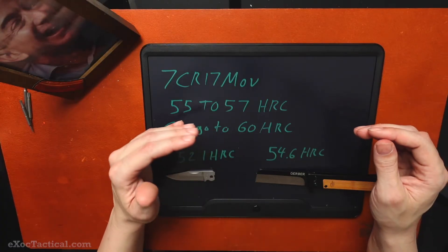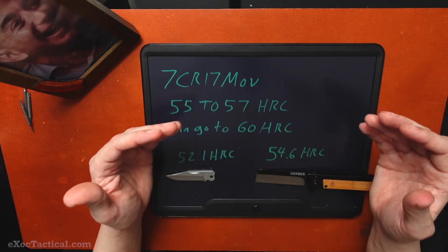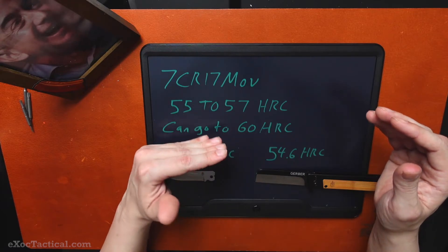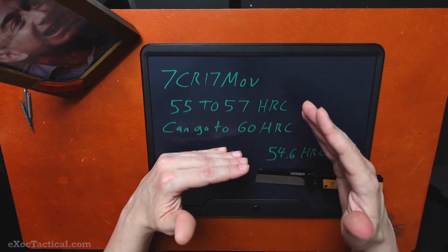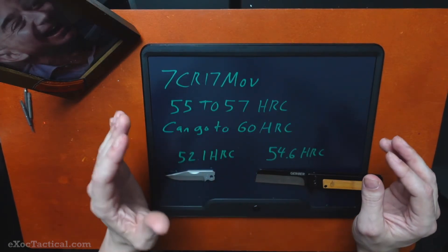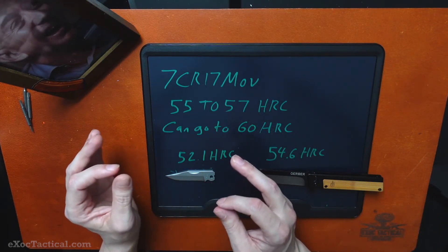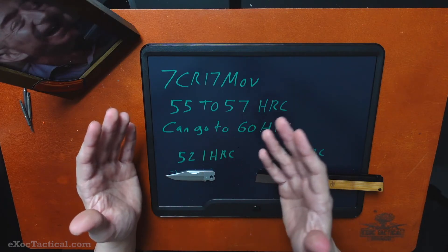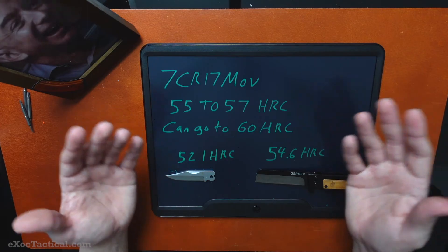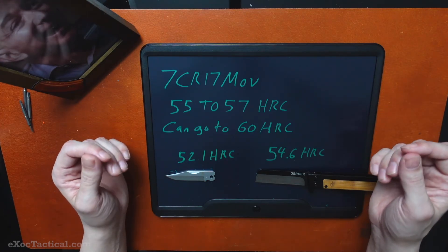Alright, so the Quadrant is made from 7CR17MOV, should be hardened to 55 to 57 HRC. Sometimes it can even go up to 60 Rockwell hardness. We're coming in at a nice 54.6 on the softy side. Now the Mini ParaFrame is coming at 52.1. They say it's a stainless steel. I don't know what kind of stainless steel that is. I can't give you a map of how hard it should be. So until next time, we'll see you then.